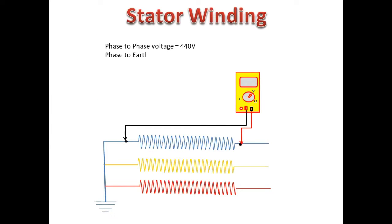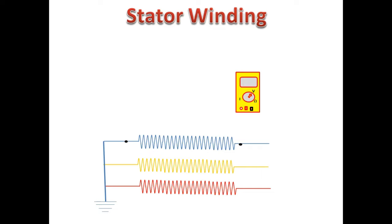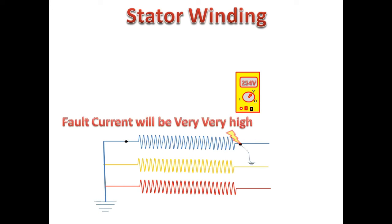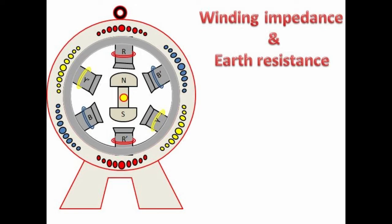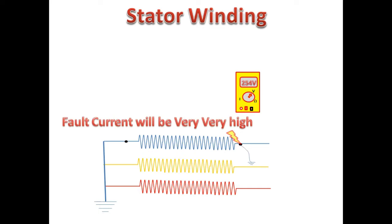When I measure the stator winding with respect to neutral, it will be 254 volts. Now we consider an earth fault occurring at this point. Due to this earth fault, the fault current will be very high, depending on the winding impedance and earth resistivity.